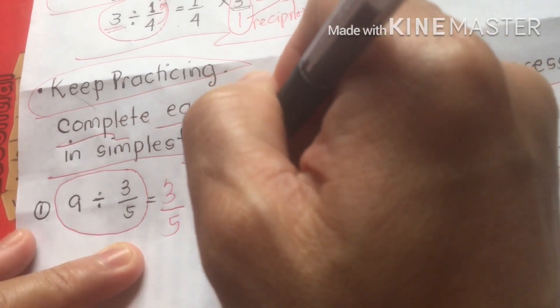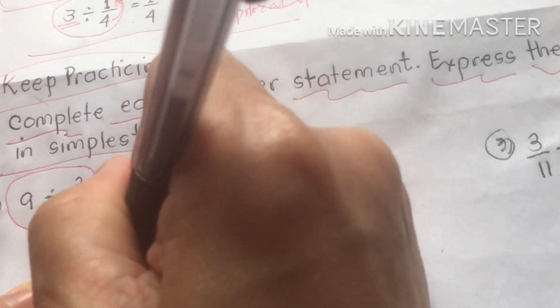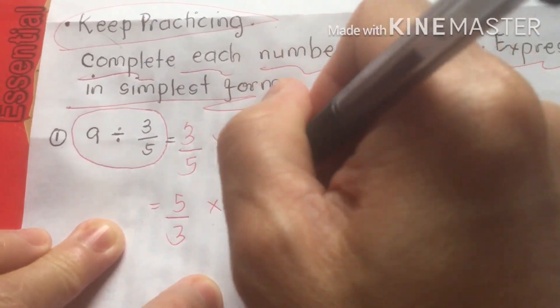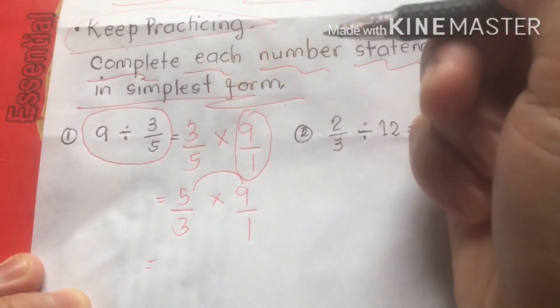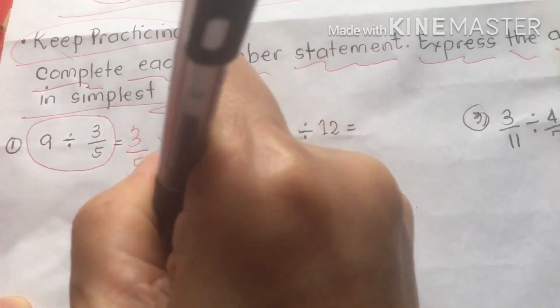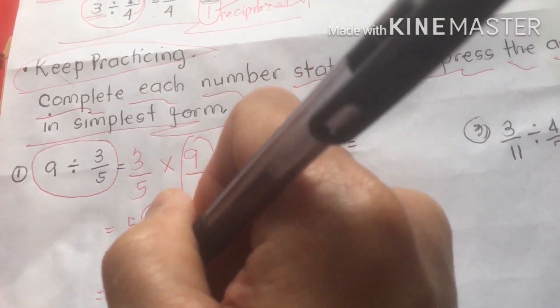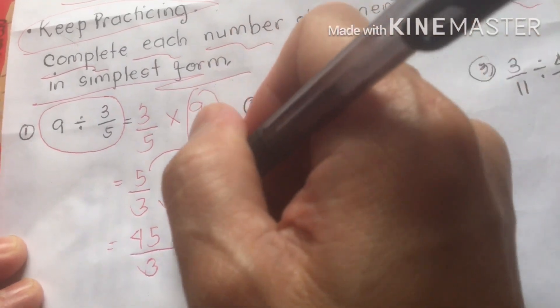Following the same procedure, we write three-fifths times nine-over-one. Then we reverse the divisor: three-fifths becomes five-over-three. So we have five-over-three times nine-over-one. Multiplying: five times nine is 45, and three times one is three.